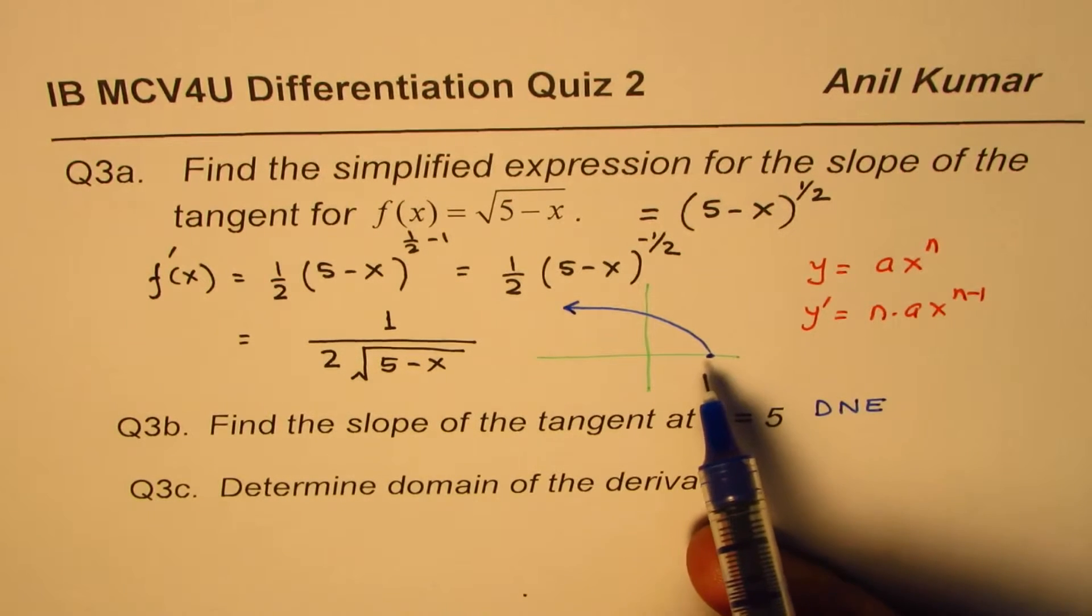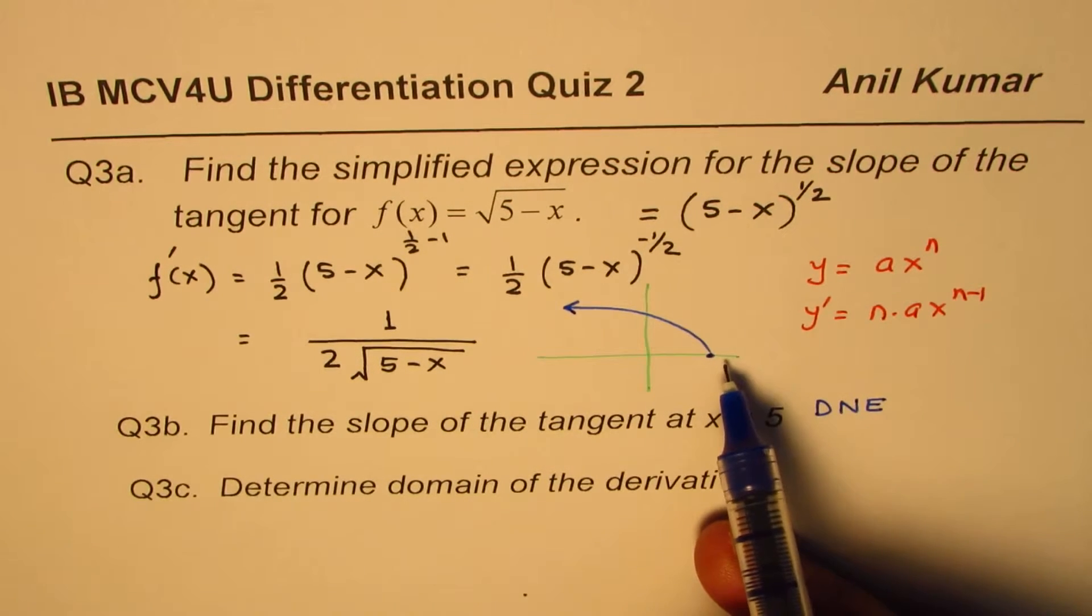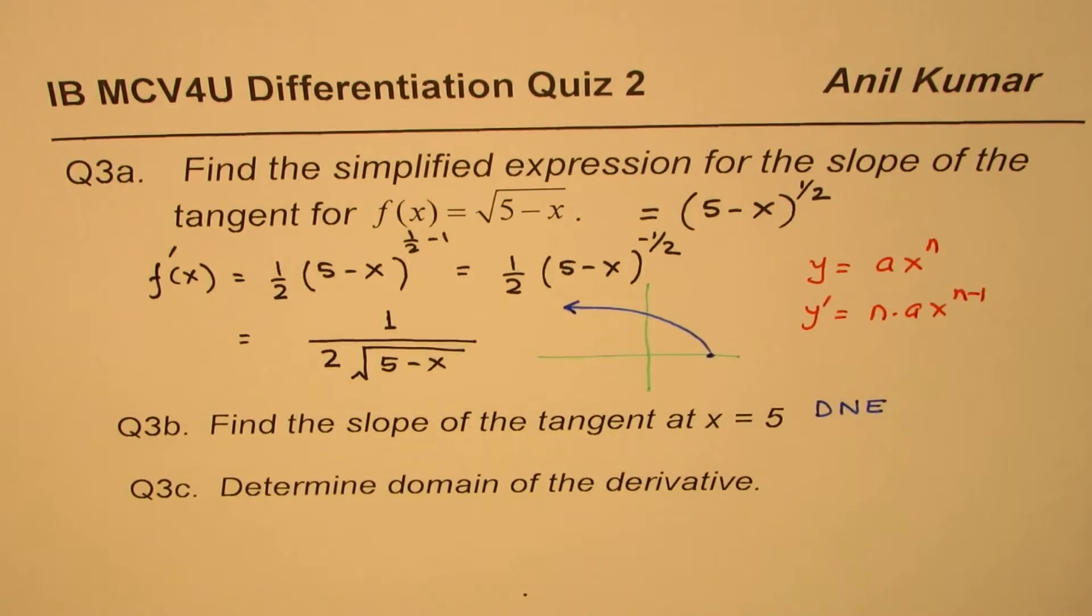As we approach from the 5 plus side, the value is undefined. So it does not exist at this point.